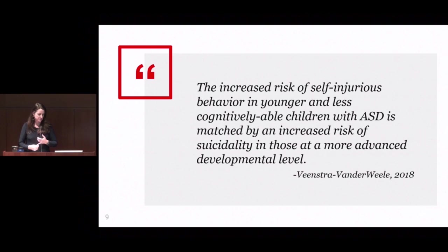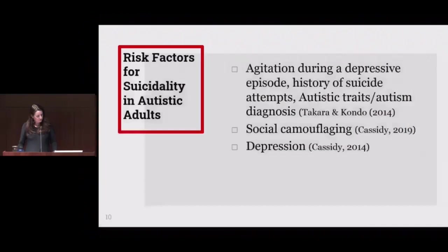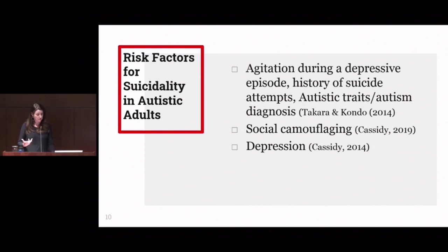Jeremy Vinstra van der Weel wrote in an editorial: 'The increased risk of self-injurious behavior in younger and less cognitively able children with autism spectrum disorder is matched by an increased risk in suicidality in those at a more advanced developmental level.' Studies on risk factors for suicidality in autistic adults have found agitation during a depressive episode, a history of suicide attempts, and autistic traits themselves and an autism diagnosis to be closely associated with increased suicidality.